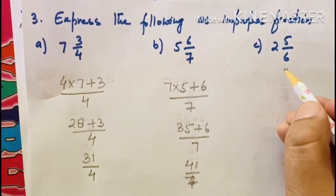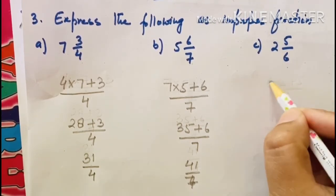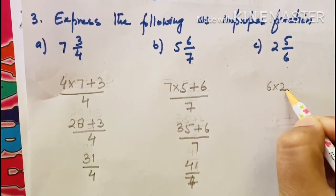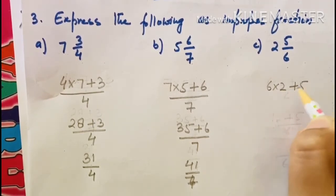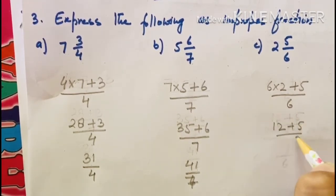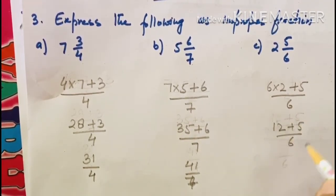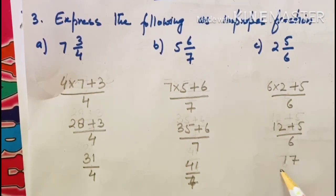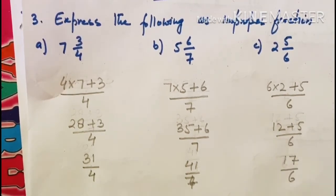Next third part. 6 ko 2 ki saath multiply karna hai. 6 ko 2 ki saath multiply, plus karna hai 5 divided by 6. 6 to the 12 plus 5 upon 6. Dono ko plus karo, 17 upon 6. This is your answer.